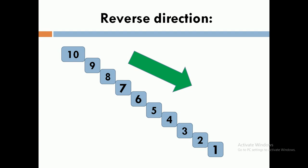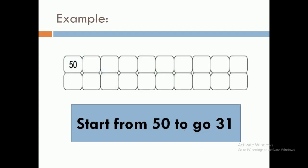Let's have another example. I will start from number 50 and go to number 31. So what will I do? I will count backward in reverse order: 50, 49, 48, 47, 46, and you can see that the next number is smaller than the previous one.